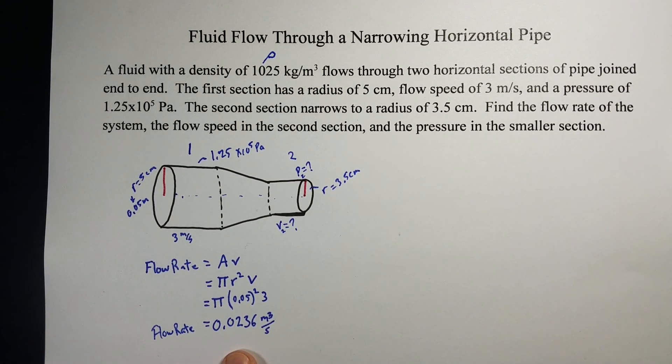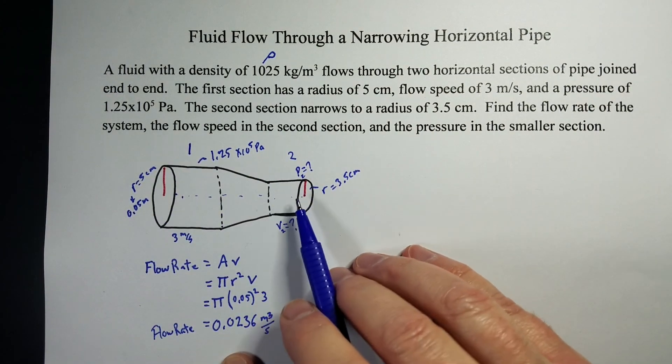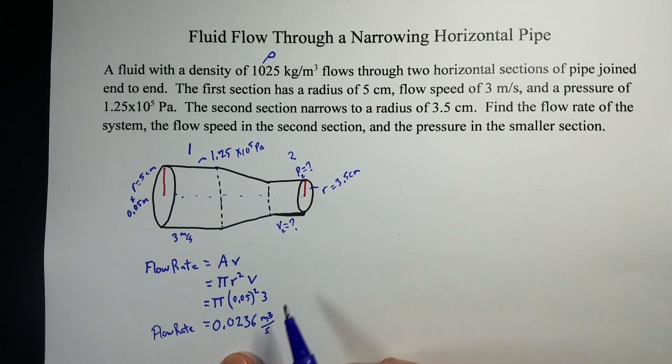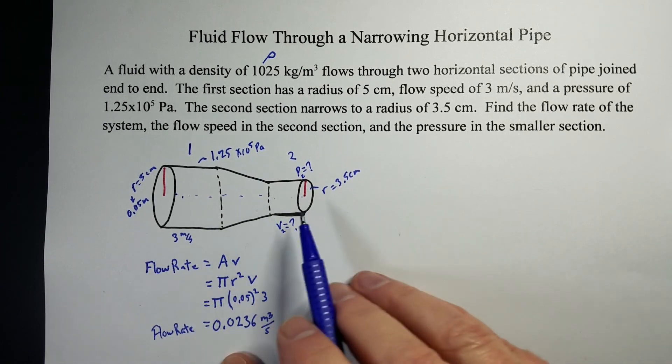That's how much fluid flows through this pipe every second. Now, whether it tapers down or not, that's got to be the flow rate, because that stays constant throughout the entire system.